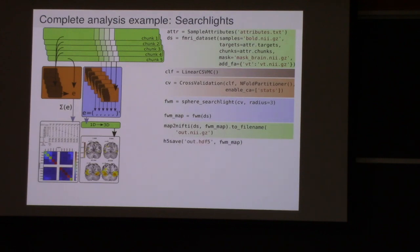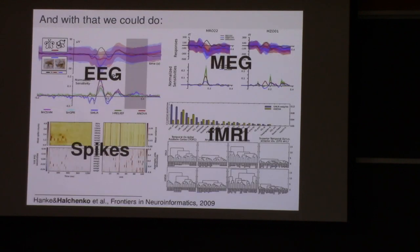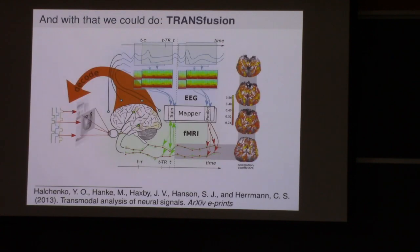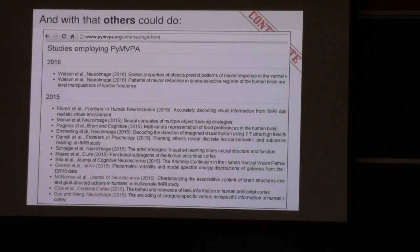We save that map back into NIfTI — we unflatten it and put it into the original location. We could use AFNI or FSL to visualize it, or save it into HDF5 for easier interoperability with PyMVPA itself. The same approach applies to EEG, MEG, neural spike recordings, fMRI, and also across modalities. That was part of my PhD thesis on 'transfusion' — trying to predict fMRI signal from EEG signal. Others have also managed to use PyMVPA; there are papers in really nice journals which use it, and our work contributed to the work of others.